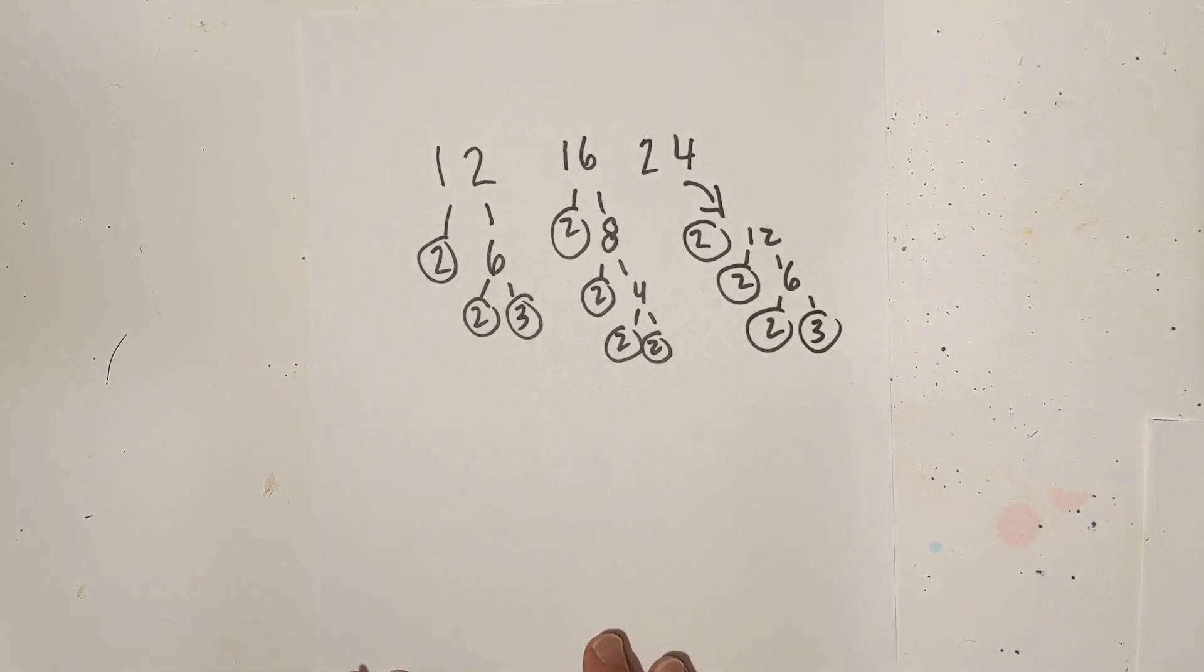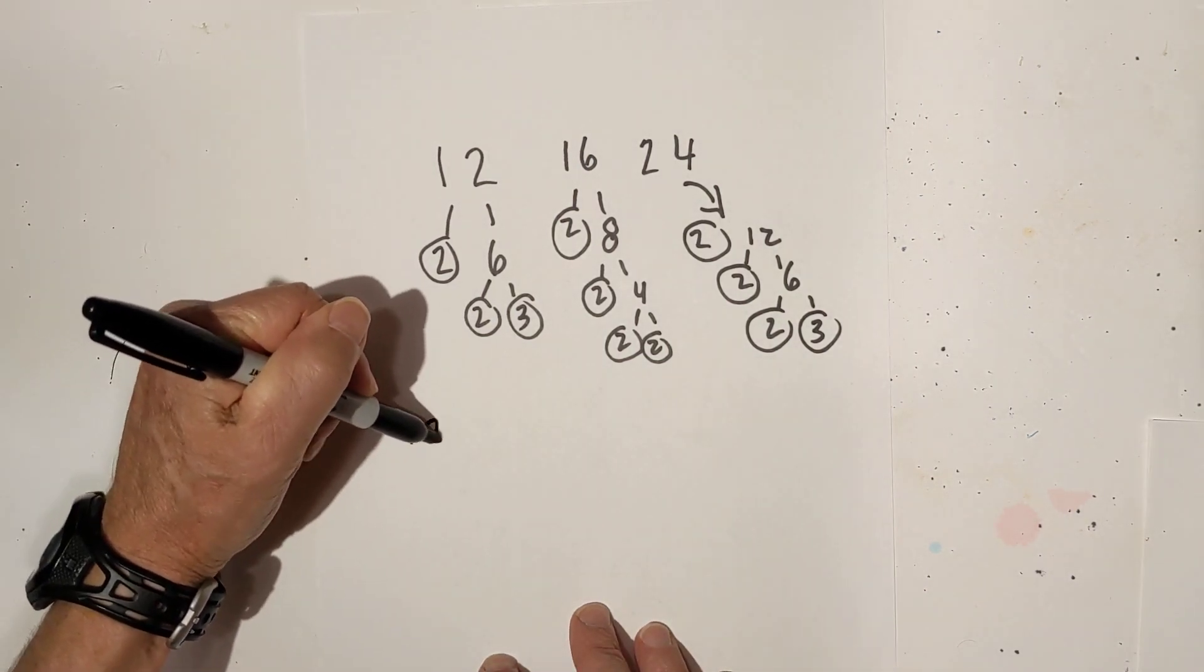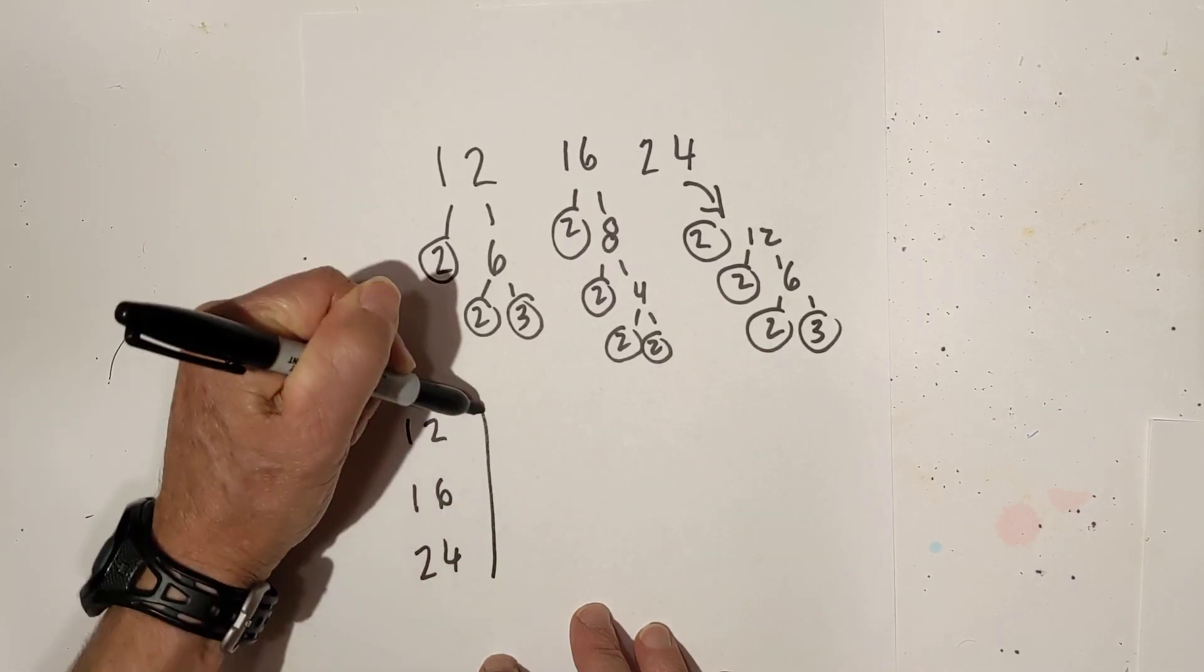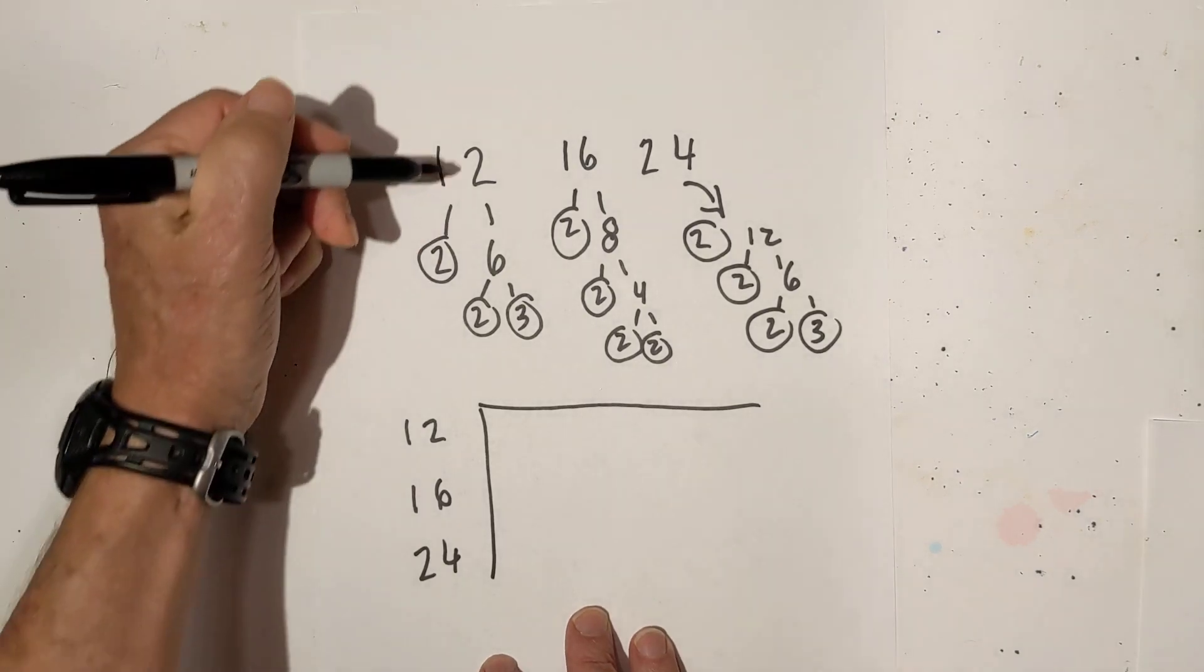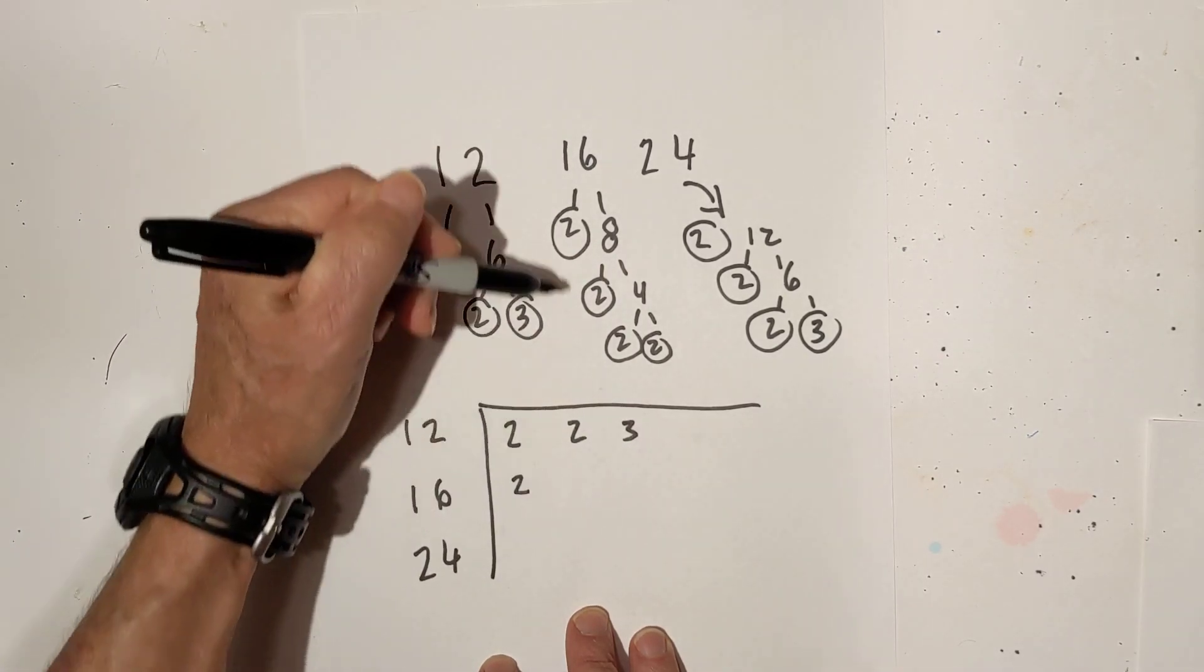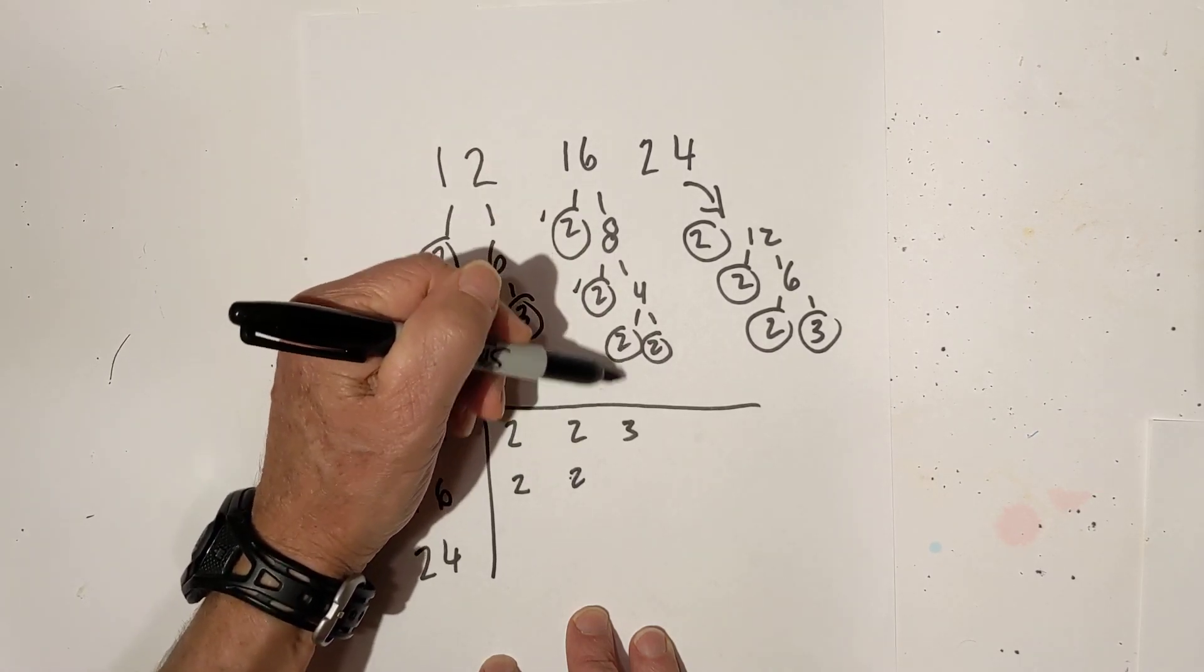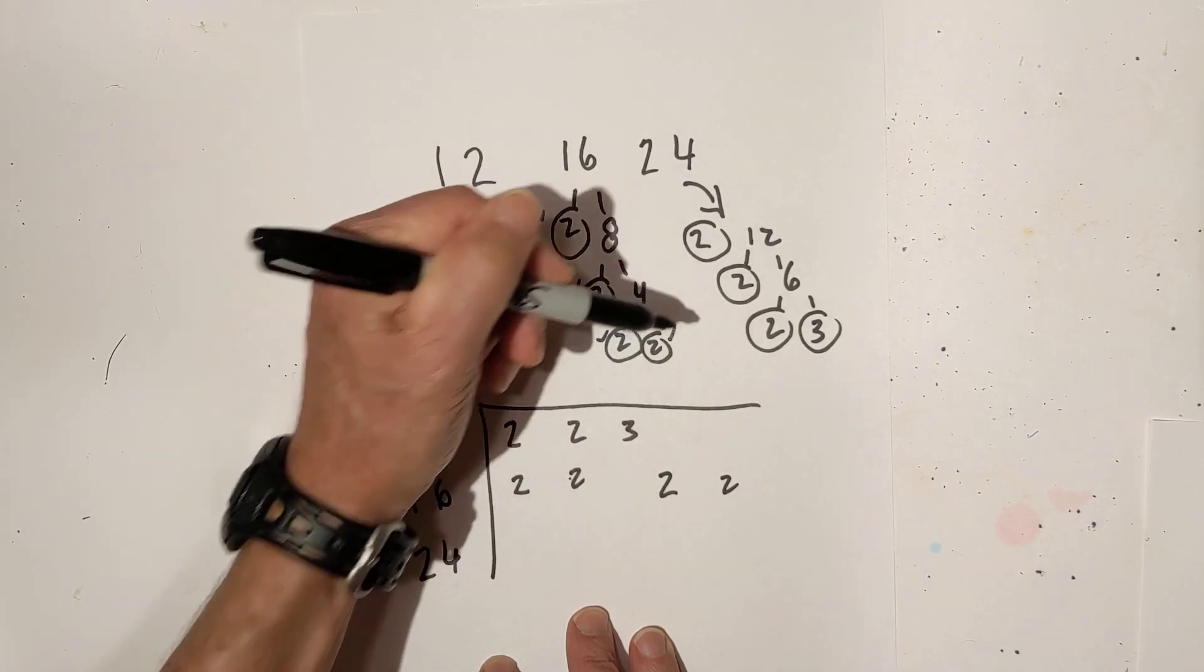Okay, so now we have all the prime numbers. Remember, we are going to draw a chart just like we did before. And this is what I really changed, and it's just made it so much easier drawing this chart. I'm going to do the 12: I'm going to go 2, 2, 3. Now with 16, I have lots of 2s, so I'm going to write a 2, then a 2. I don't have a 3, so I'm going to skip over, then a 2 and a 2.